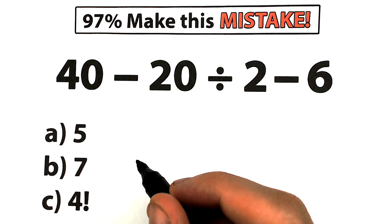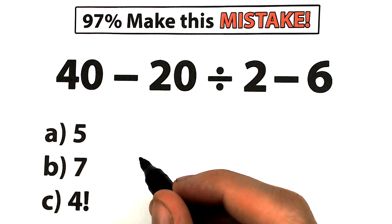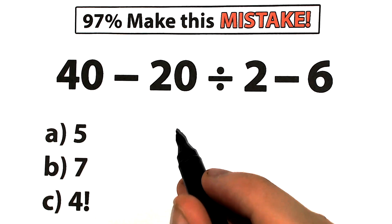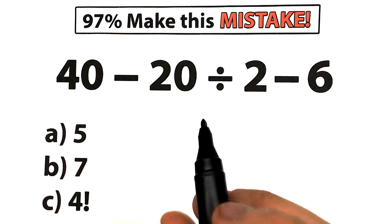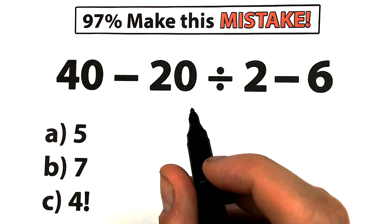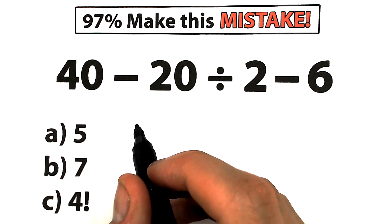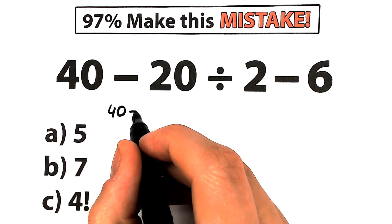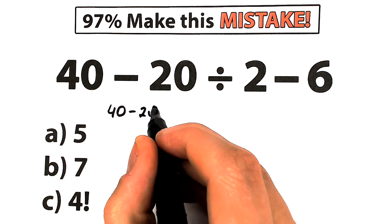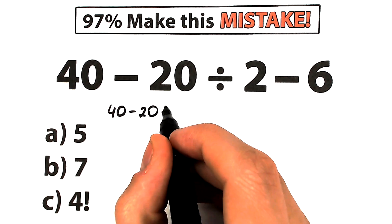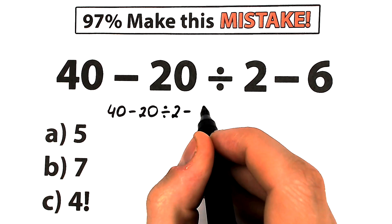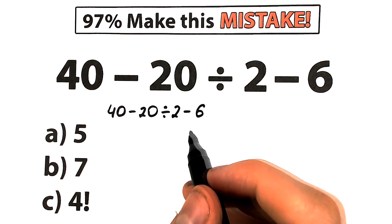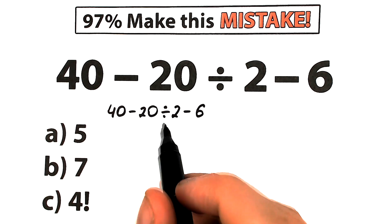Of course we don't want to use our calculator — let's use our brain and check our answers at the end of the video. It will be a really interesting and tricky question. One part of students solve this question like this: we have 40 minus 20 divided by 2 and minus 6.